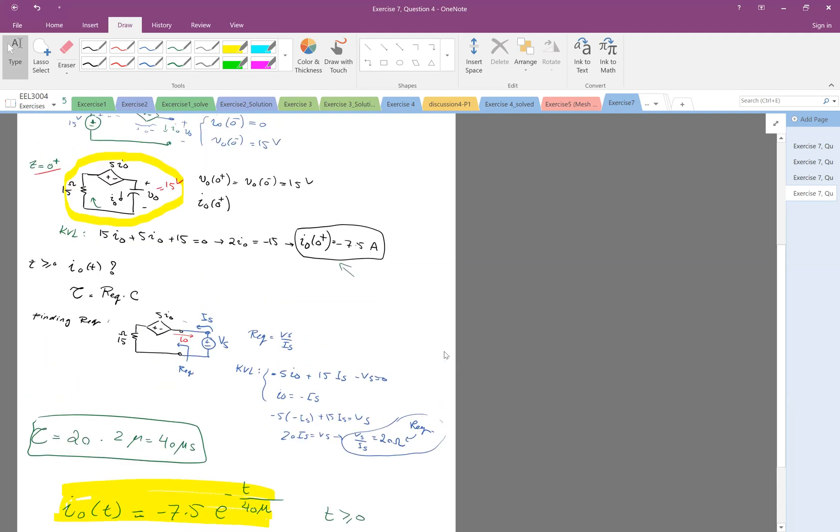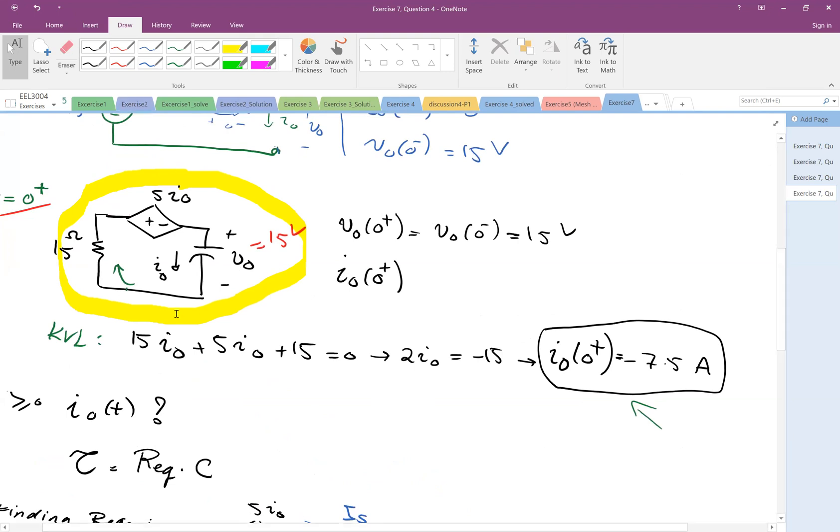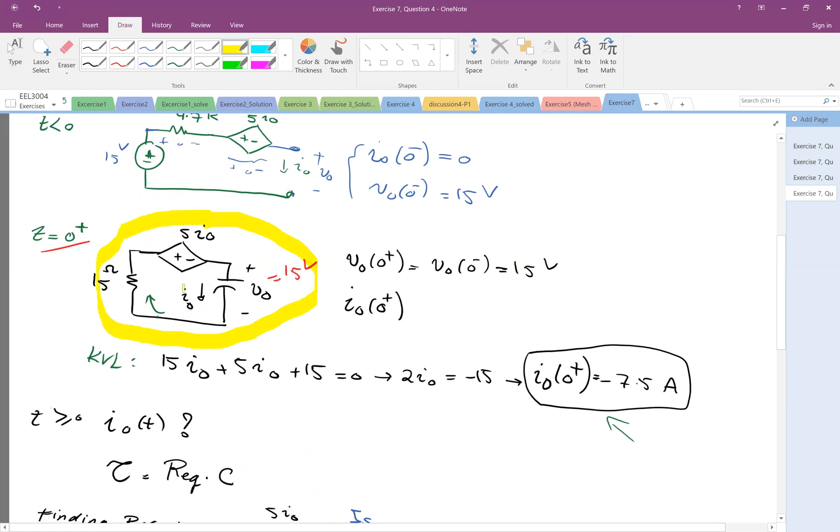So I should also mention here again that because there was no independent voltage source after the switching, so this happened after the switching. There's no independent voltage source. So when there's no independent voltage source, therefore it's going to be a natural response. We don't have an independent source. So because it's a natural response, you don't have to look at the I infinity or V infinity. But anyway, even if you do that, that's fine. At infinity, as you see, the capacitor will be open. So anyway, I0 at infinity is going to be 0. So given this, you can also use general information and you will get the same result.